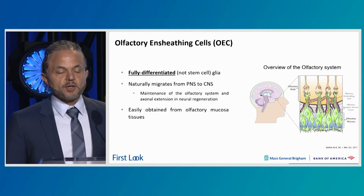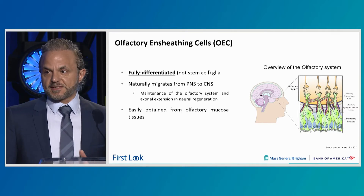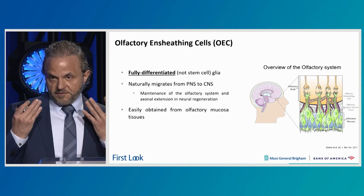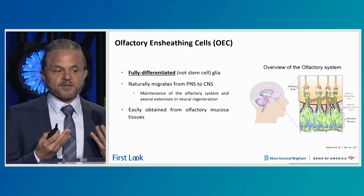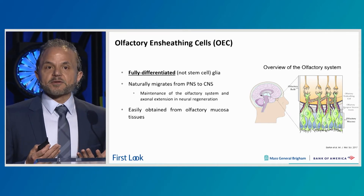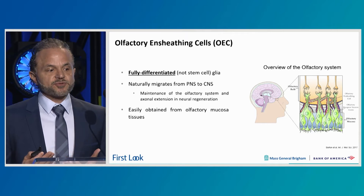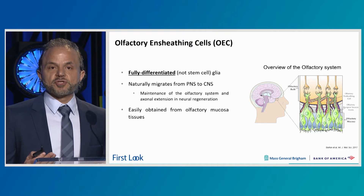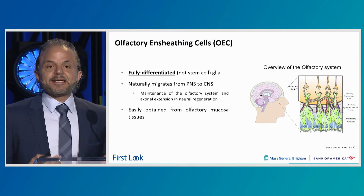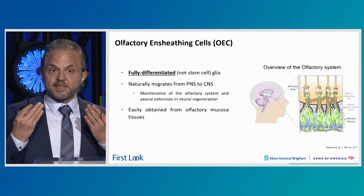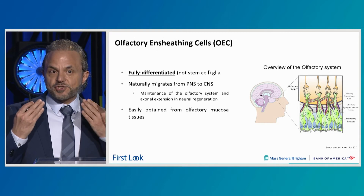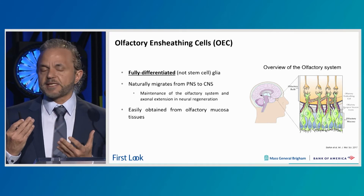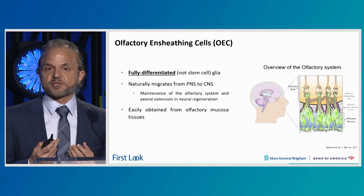So what are these OECs? They're fully differentiated cells — this is very important, they're not stem cells. They're actually found in the olfactory mucosa and olfactory bulb. They naturally migrate from the peripheral nervous system to the central nervous system, and their role is to maintain the olfactory system, axonal extension, and neural regeneration. They can easily be obtained from the olfactory mucosa tissue, which is one of the very few tissues in your body that can self-regenerate, and these are the cells responsible for that self-regeneration.